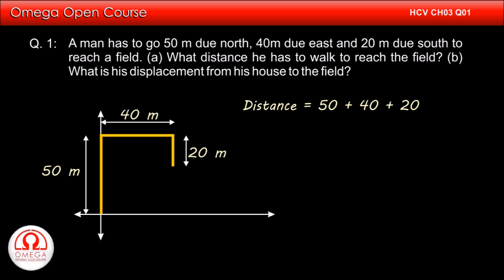As can be seen in the diagram, the distance travelled is 50m plus 40m plus 20m, adding we get 110m. This is answer to part A of the question.